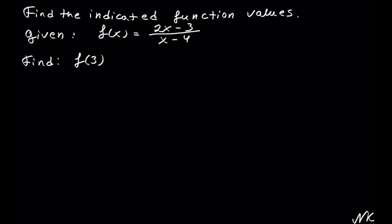In this example we are going to use the same function f of x and find f of 3. We take the original function, which is a fraction with 2 times x minus 3 in the numerator out of x minus 4 in the denominator, and instead of x we're going to substitute 3. So we have 2 times 3 minus 3 out of 3 minus 4.